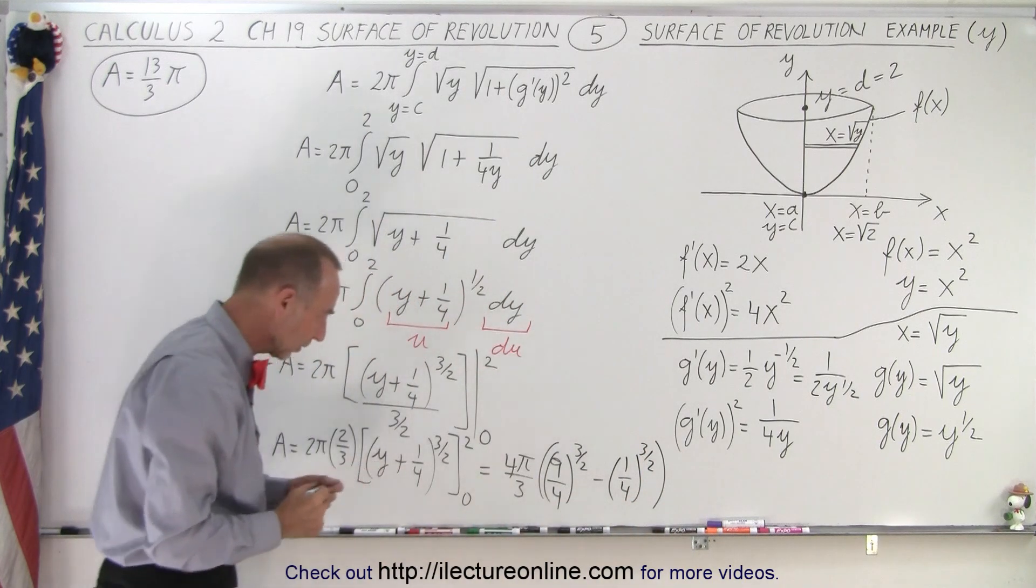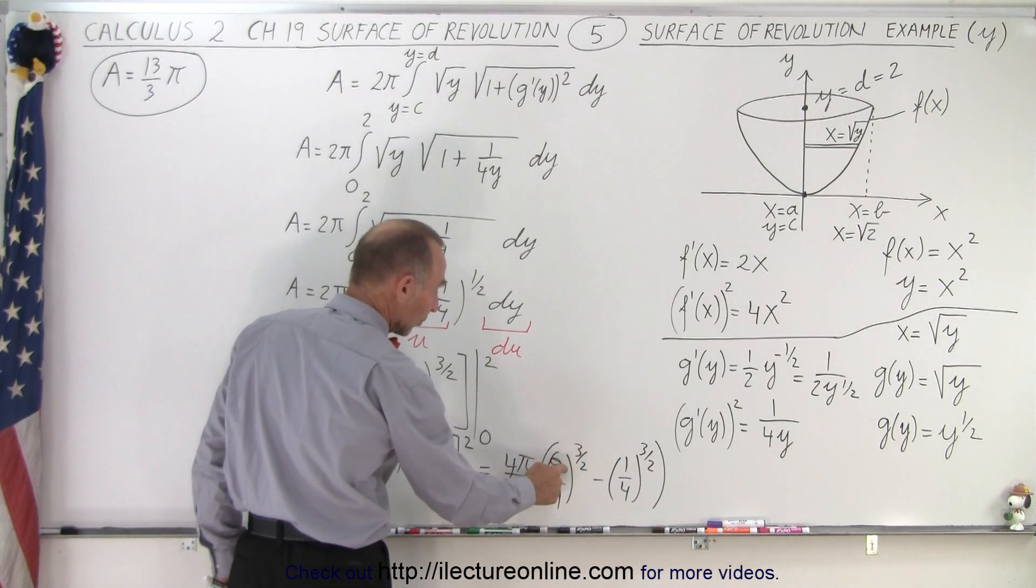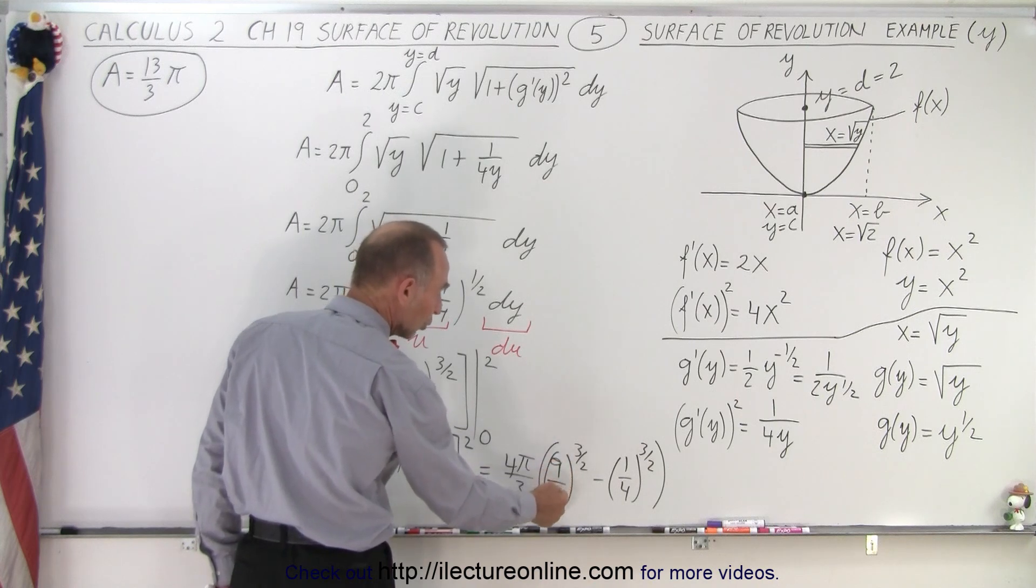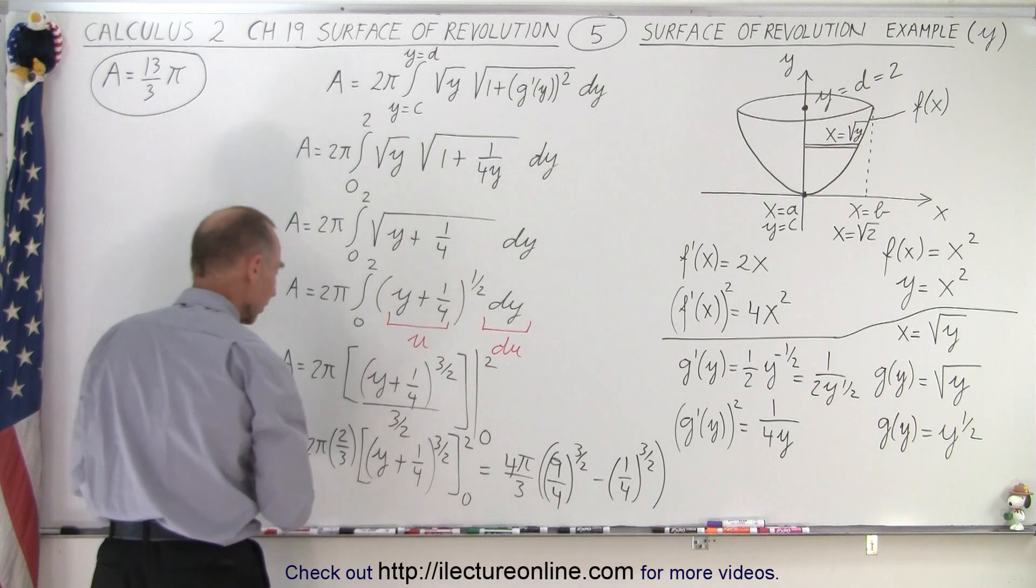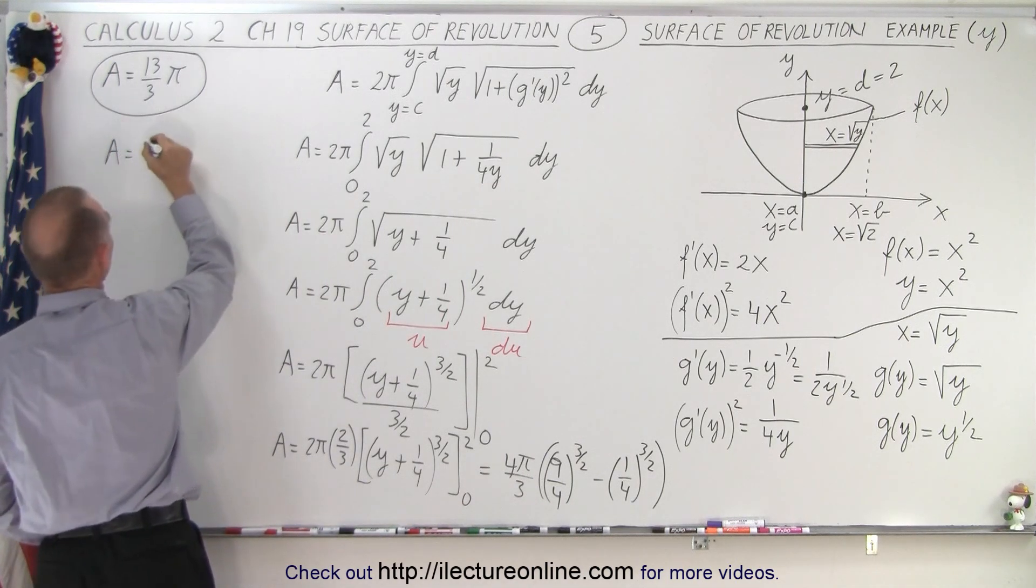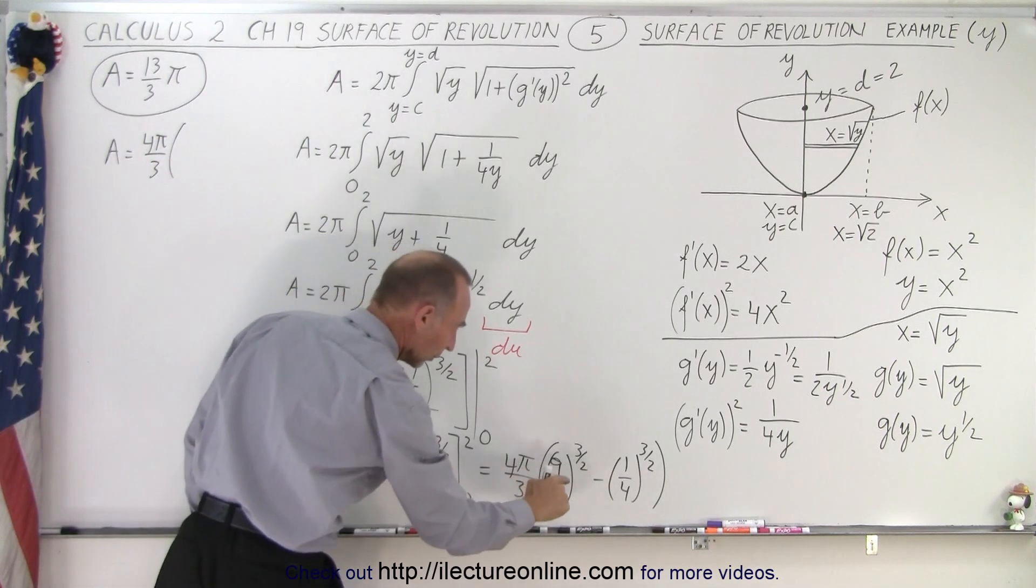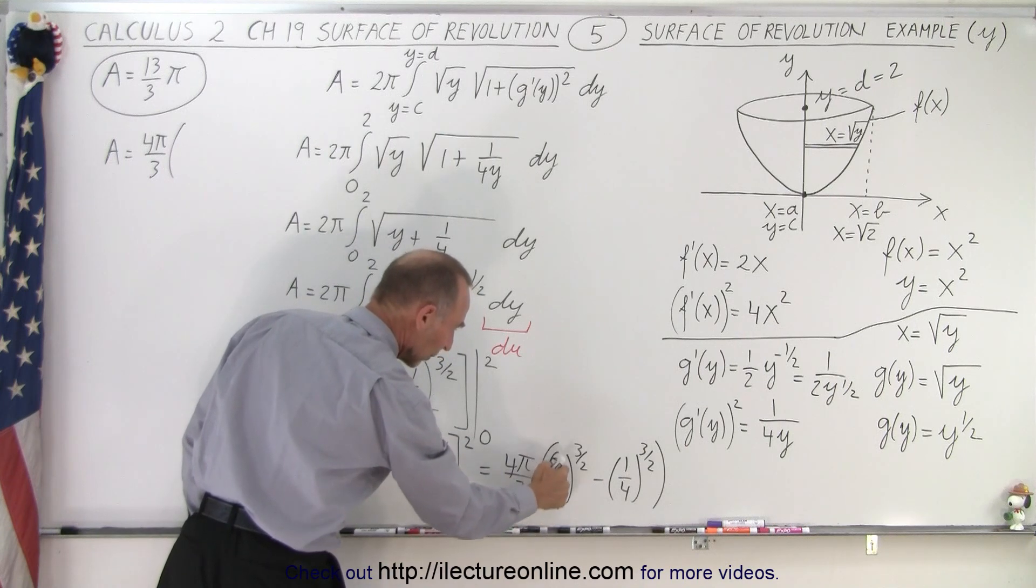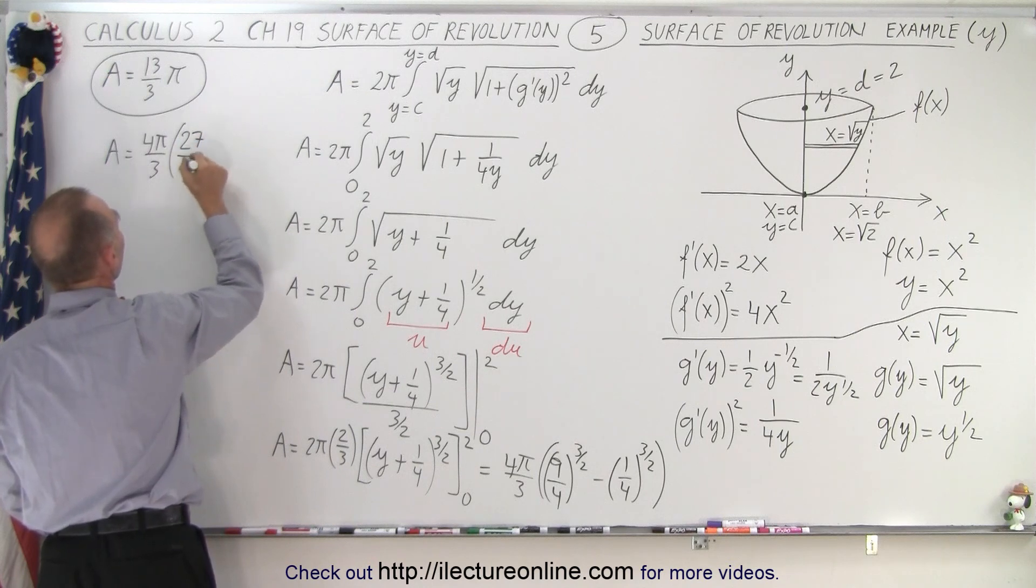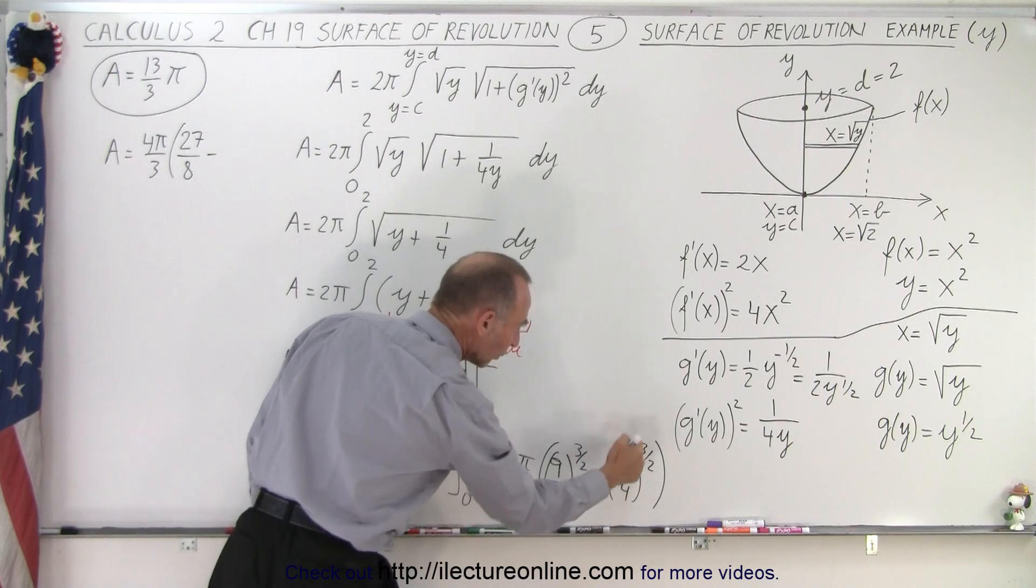So here we have a little bit of arithmetic to do, we need to be careful. You see here that 9 is a perfect square, 4 is a perfect square, so we can take the square root of this, that gives us 3 over 2, then when we cube it, we get 27 over 8. So we can then say that the area here is equal to 4 pi over 3 times, take the square root, 3 halves, cube it, we get 27 over 8, minus here we take the square root, we get 1 over 2, cube it, we get 1 over 8.